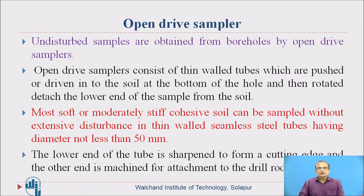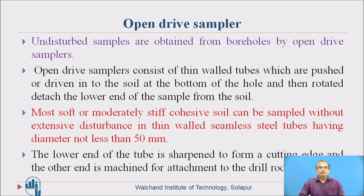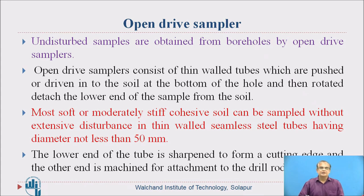Undisturbed samples are obtained from boreholes using an open drive sampler. The open drive sampler consists of thin-walled tubes which are pushed or driven into the soil at the bottom of the hole, then rotated to detach the lower end of the sample from the soil. Most soft or moderately stiff cohesive soils can be sampled without extensive disturbance using thin-walled seamless tubes with a diameter not less than 50 mm.